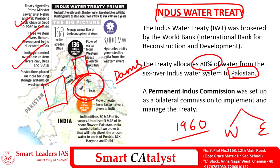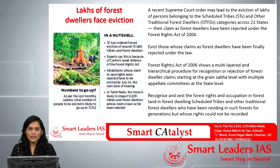In case of any bilateral problems arising between the two countries in implementing the treaty, a separate commission called the Permanent Indus Commission was set up as a bilateral commission to manage and implement the treaty efficiently. Currently this water treaty has been brought back to news because of the Jammu Kashmir attack on CRPF officials, with a statement released about cutting down the excess flow of water along these rivers.